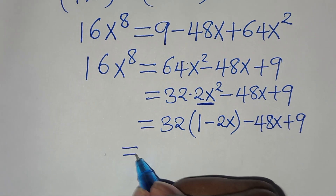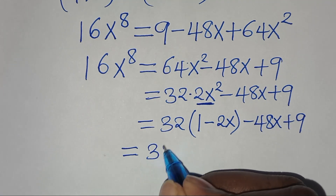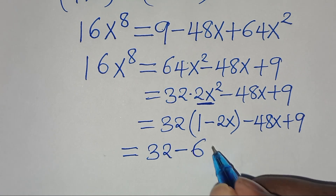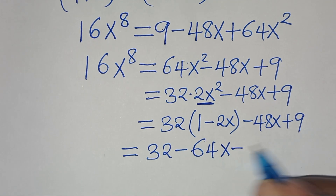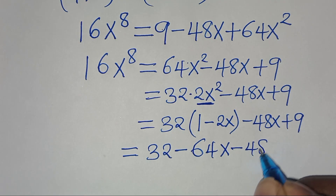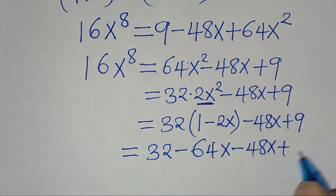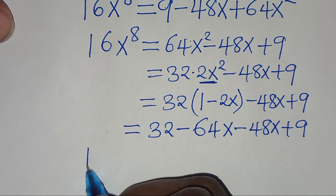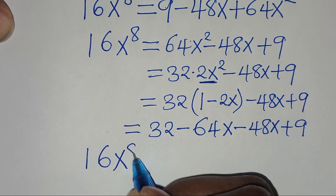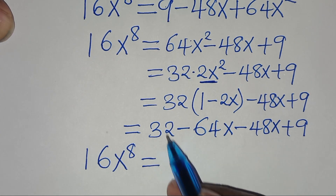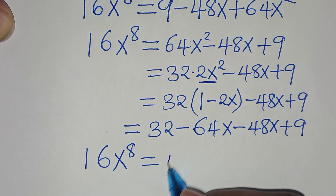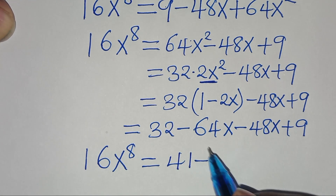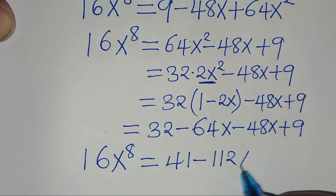Expanding: 32 times 1 is 32, minus 32 times 2x is 64x, then minus 48x, plus 9. This implies that 16x to the power of 8 equals 32 plus 9 minus 64x minus 48x, which gives us 41 minus 112x.